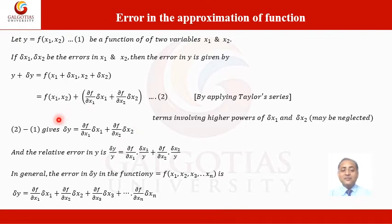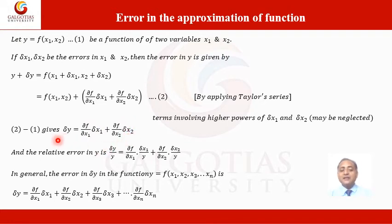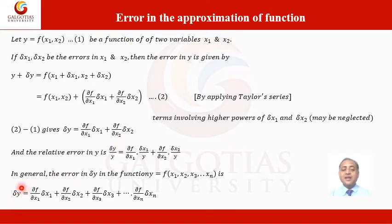This gives us the error in the dependent variable if we know the errors δx₁ and δx₂ in the independent variables. Similarly, if y is a function of n independent variables, we can apply the same steps to find the error in the dependent variable in terms of errors in all the independent variables.